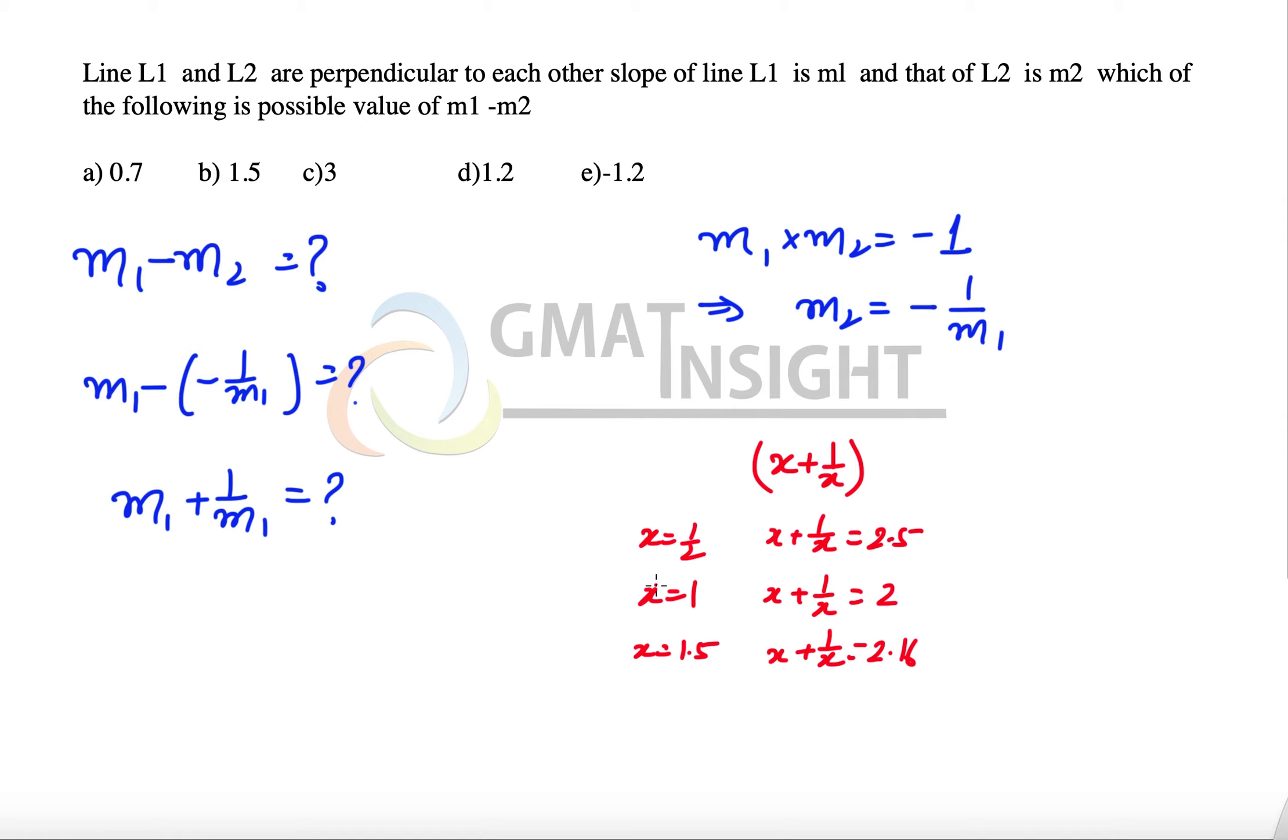Now if we keep iterating the values, we will notice one thing: the value of x plus 1 over x when x is positive cannot be less than 2. So we understand that x plus 1 over x definitely has to be greater than or equal to 2.